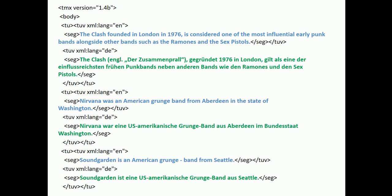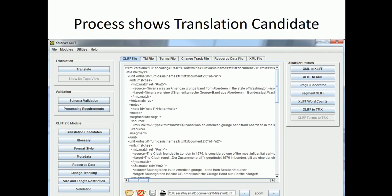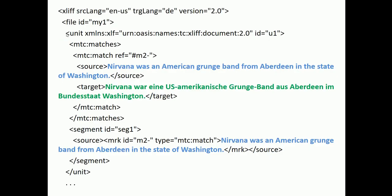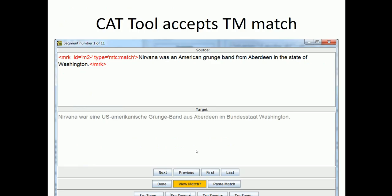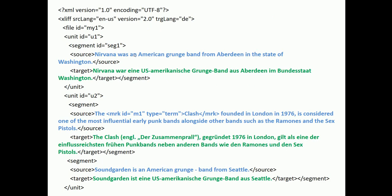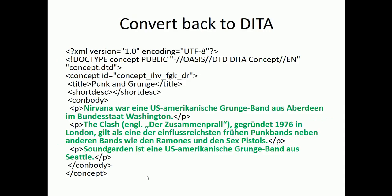We see the three segments from our XLIF file and process to show translation candidates. In XLIF 2.0, we have our unit and the MTC matches element, which tells us that for this source we found a match — here it is in German. The CAT tool says you have a match, would you like to use it? We say yes, and do that for all matches. Now we have source and target, source and target, source and target — all translated. We convert the XLIF back into DITA and have a translated topic using strictly translation memory.